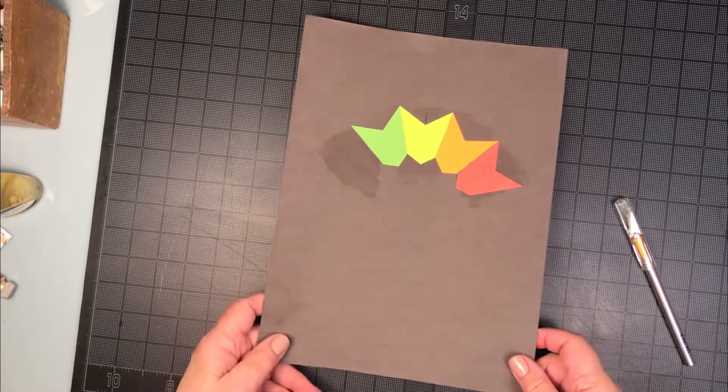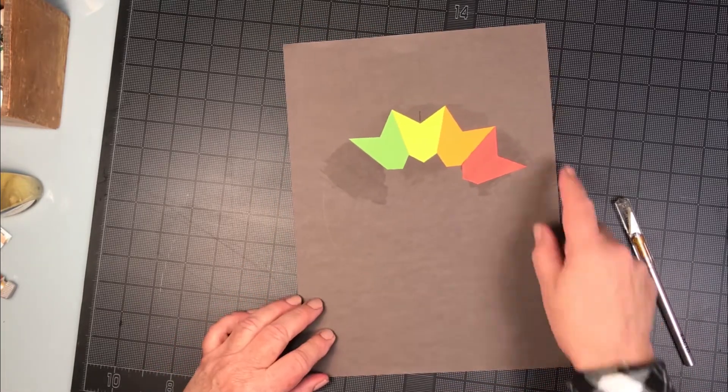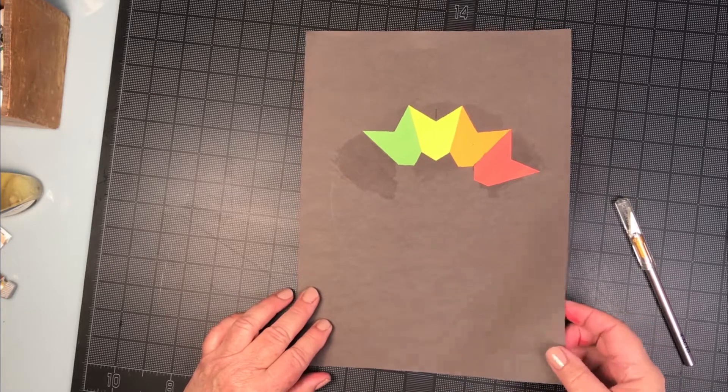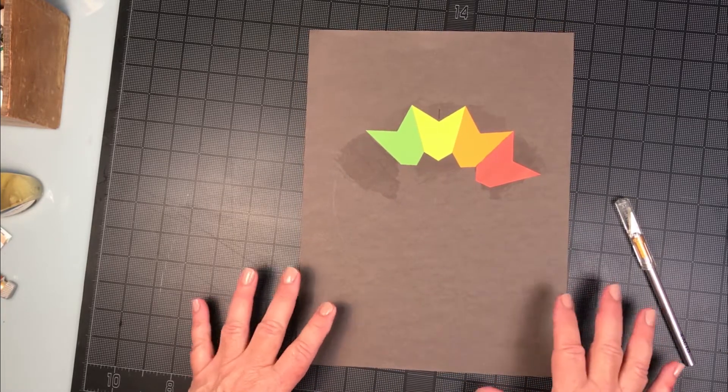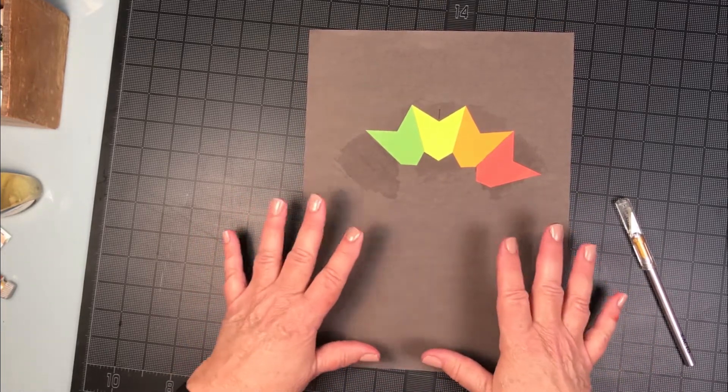This is the Canson Mi Tiantis paper and it's cut to 9 by 12. It is a middle value gray, which is what we're looking for. So you're going to put this on a gray backing.